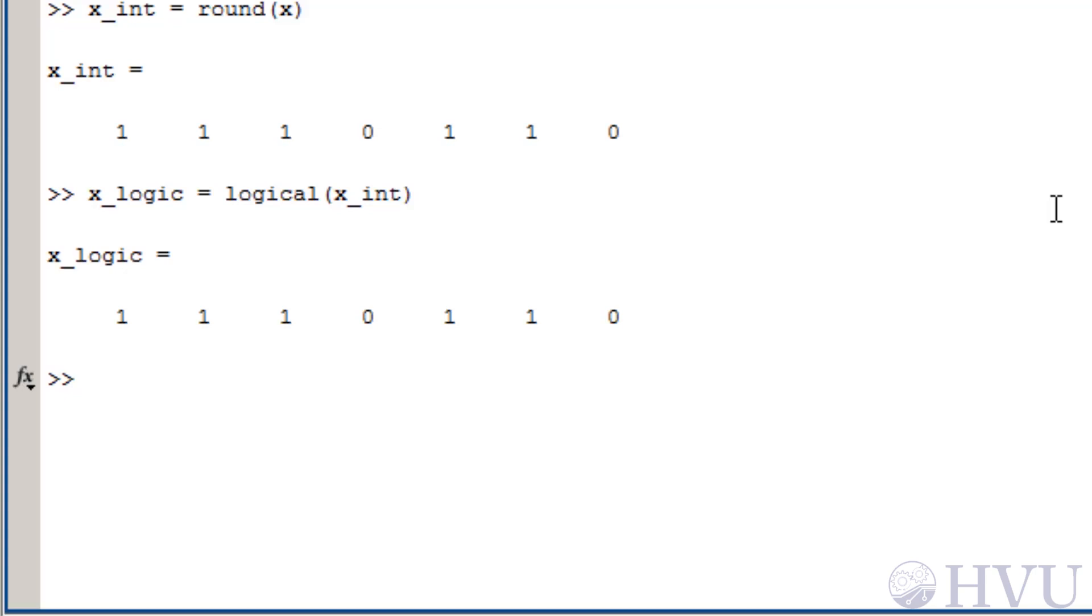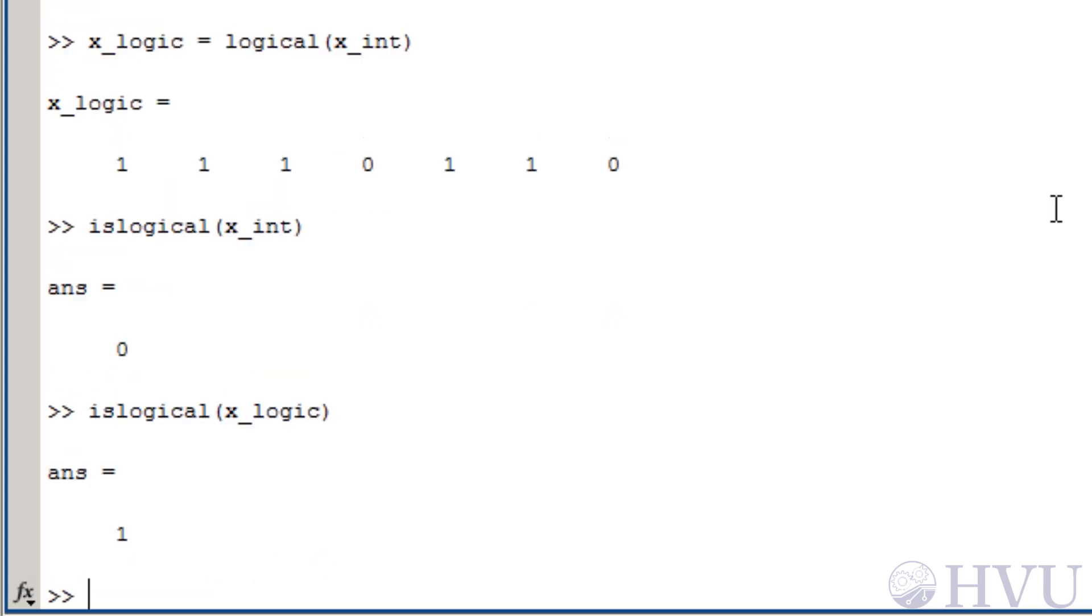To see the difference, use the ISLOGICAL function. I'll type ISLOGICAL of x underscore INT, a 0 is returned, indicating that these values are ordinary numbers. Now, if I type ISLOGICAL of x underscore LOGIC, I get a 1. So the x underscore LOGIC array contains LOGICAL values. This is also apparent in the WORKSPACE window where x underscore LOGIC array is indicated as being a LOGICAL array.